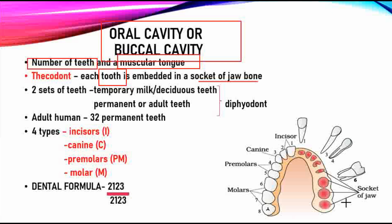In the thecodont arrangement, each tooth is embedded in a socket of the jaw bone. You can see this clearly in the picture — in the skull, each tooth sits in a socket of the jaw. This type of attachment is called thecodont.